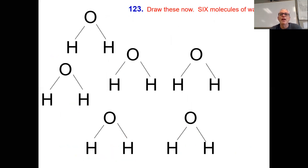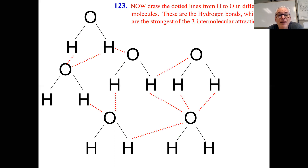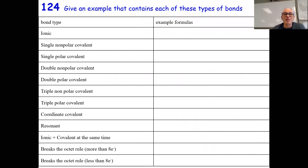We draw six water molecules and then draw hydrogen bonding between them using dots or dashes — those are different from the lines representing the single polar covalent bonds within each molecule. The red dot-dashes go from hydrogen to oxygen between the molecules. This is the strongest of the three intermolecular attractions and it's called hydrogen bonding — aka super duper dipole.